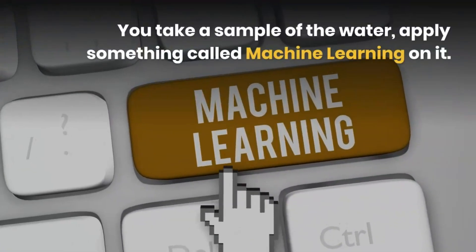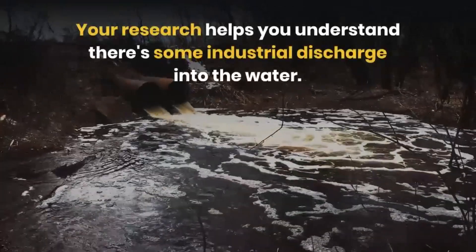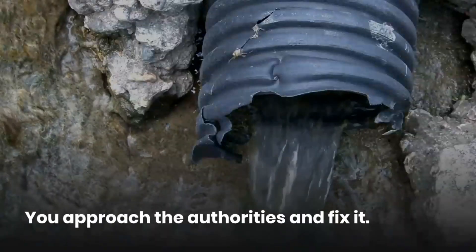You take a sample of the water. Apply something called machine learning on it. Your research helps you understand there's some industrial discharge into the water. Now you approach the authorities and ask them to fix it.